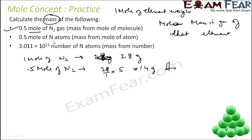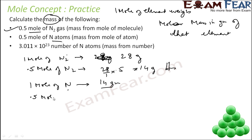The second part is 0.5 mole of N atoms — please note this is the atom, not the molecule. 1 mole of N atoms is 14 grams. The molecular mass of N atom is 14, and N2 is 28 because there are 2 N. So 0.5 mole of N will be 14 divided by 1 into 0.5, which is 7 grams.